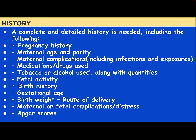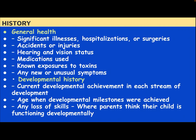Birth history includes gestational age, birth weight, route of delivery, maternal or fetal complications, distress, stroke. General health includes significant illness, hospitalization or surgeries, accident or injury, hearing and vision status, medication use, non-exposure to toxins, and any new or unusual symptoms.